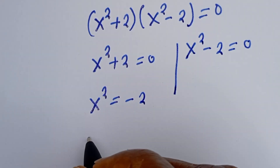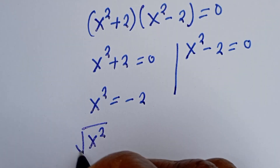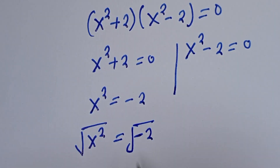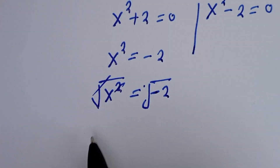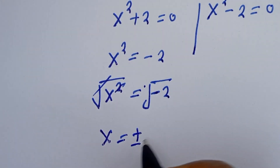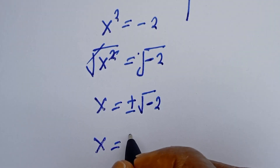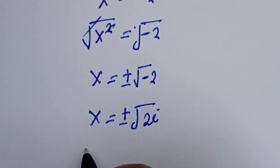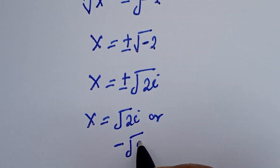Taking the square root of both sides, s squared square root is equal to minus 2 square root. This cancels, giving s is equal to plus or minus the square root of minus 2. Then s is equal to plus or minus the square root of 2i, so s equals square root of 2i or minus square root of 2i.